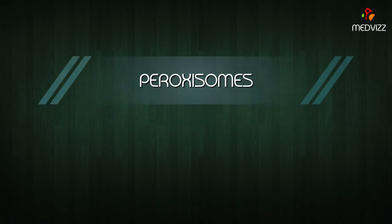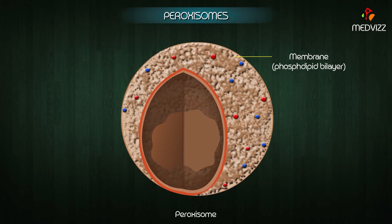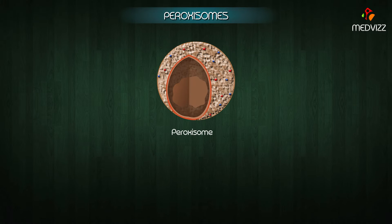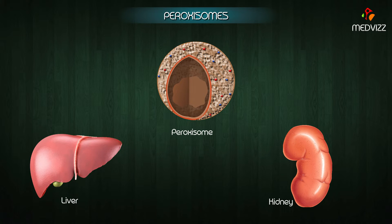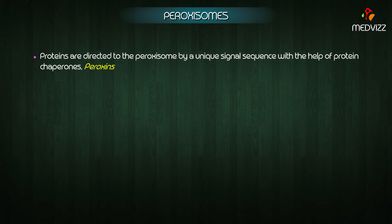Peroxisomes are 0.5 micrometers in diameter and are surrounded by a membrane. The highest concentration of peroxisomes is in the liver and kidney. Proteins are directed to the peroxisomes by a unique signal sequence with the help of protein chaperones.